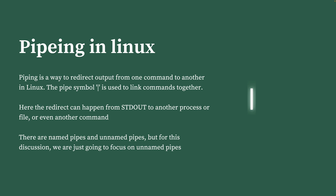There are two types of pipelines available: the named pipe and the unnamed pipe. The one we are going to discuss in this video is the unnamed pipe, not the named pipe.